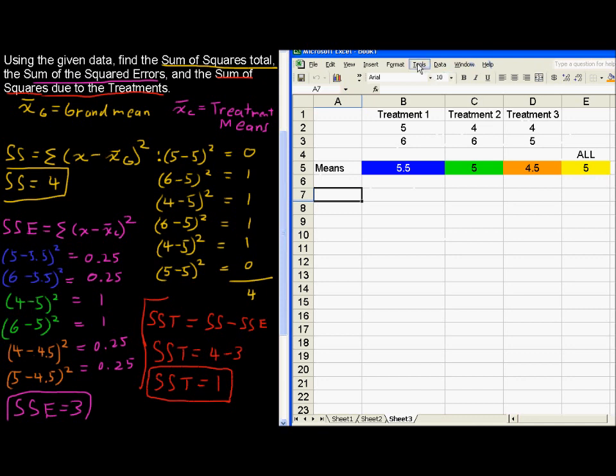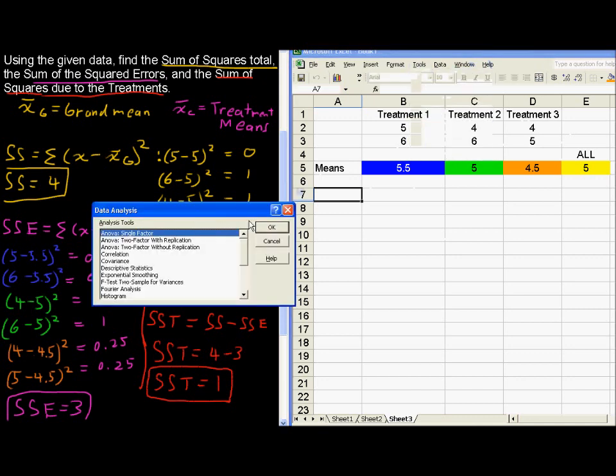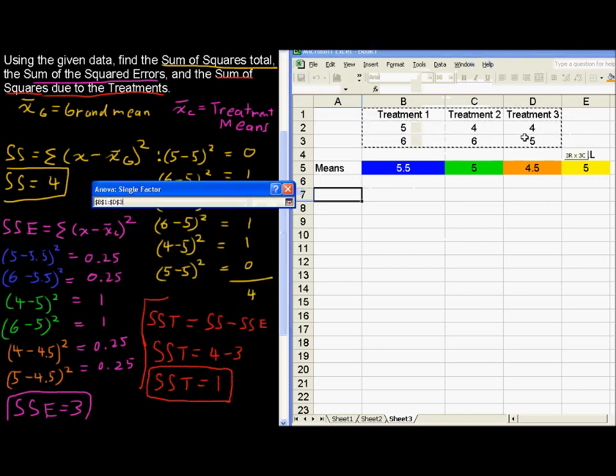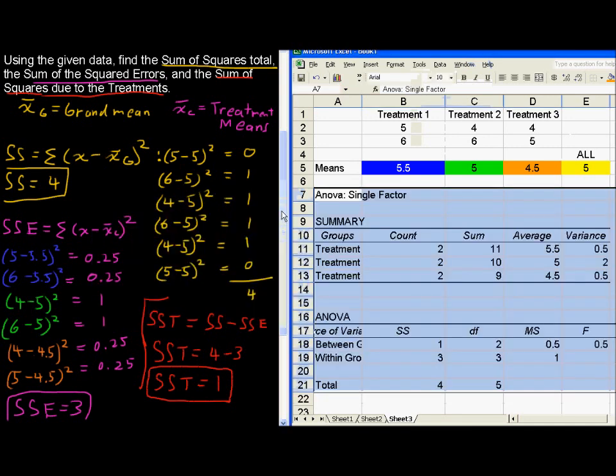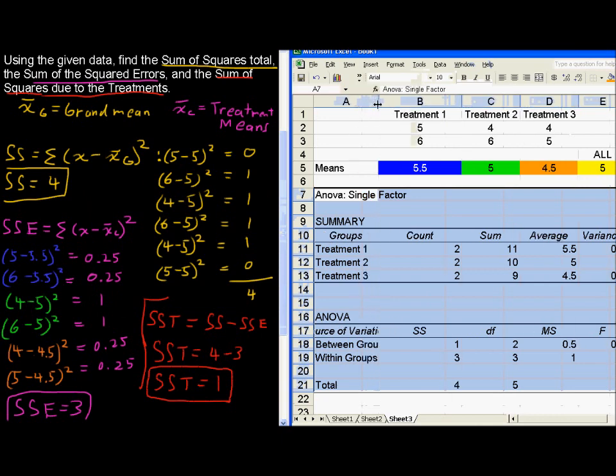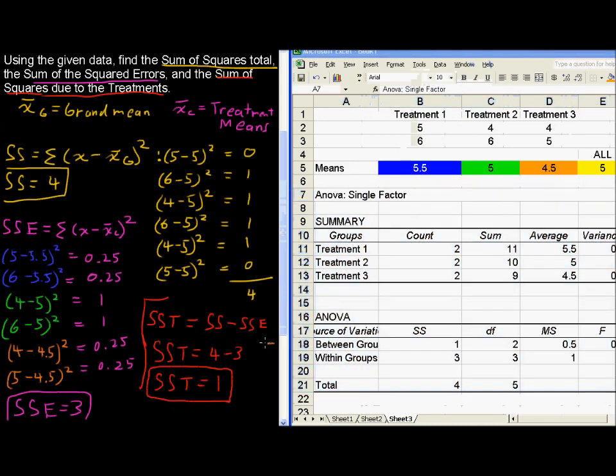By the way, look at this. What if we just went to data analysis, ANOVA single factor, chose the appropriate data, it's in columns, and then output starting right here. It gave us everything that we wanted. Between groups here, this is the treatments, and within groups is the errors. So, the SSE, as we found, was 3, the SST is 1, and the sum of squares for the total is 4.